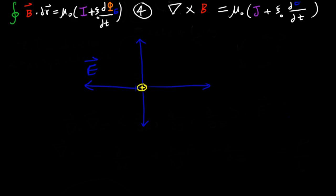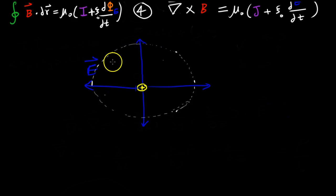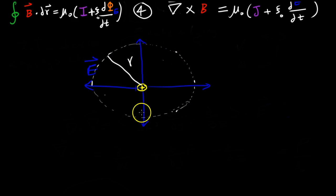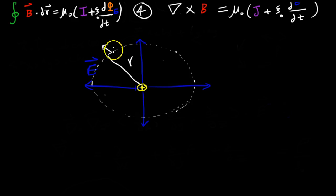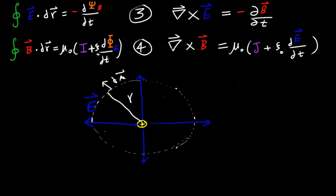This electric field has a magnitude and a direction. From a certain distance R, given that this whole quantity is symmetric — there's no higher charge density here than there — we can assume that at distance R from the center of the charge, the electric field is going to be the same magnitude on this radius, and it's going to be perpendicular to the surface element dA.